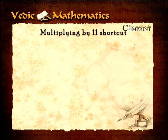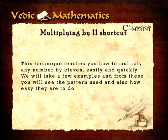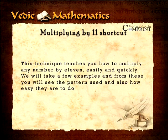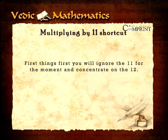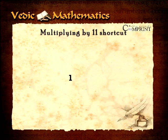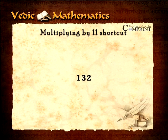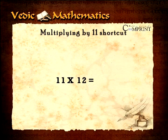Multiplying by eleven shortcut. This technique teaches you how to multiply any number by eleven easily and quickly. We will take a few examples and from these, you will see the pattern used. To begin, let's try twelve times eleven. You will ignore the eleven for the moment and concentrate on the twelve. Split the twelve apart as one and two. Add these two digits together: one plus two equals three. Place the answer three in between the twelve to give 132. Therefore, eleven multiplied by twelve equals 132.